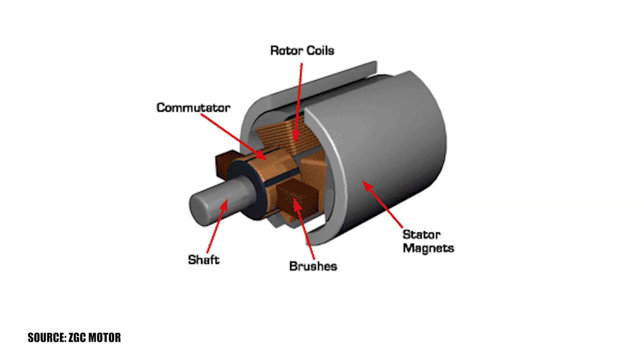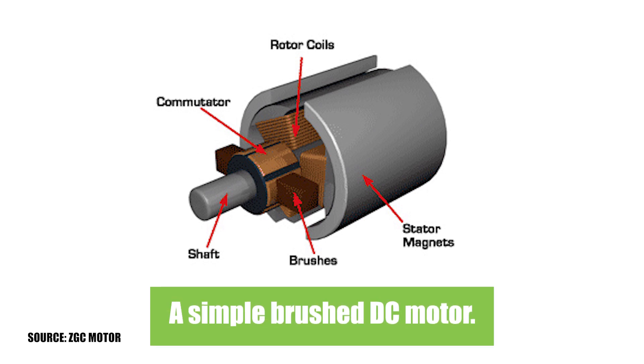The operation of a DC motor is relatively straightforward. A coil is placed in a magnetic field, and when an electric current passes through the coil, torque is produced, causing the motor to turn.